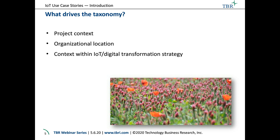We're looking for the context of individual opportunities and projects within the customer company's IoT digital transformation strategy — not only where it's being built, but how does it fit in with other things the company is doing? We believe we can demonstrate that this is important in deciding how to approach that opportunity. There are some parallels with IoT maturity, but IoT maturity is more about the customer's readiness to integrate the IoT message into their corporate strategy, whereas this is a project-specific designation. A company that's very mature in its approach to IoT may still choose one of the simpler kinds of context in this taxonomy.